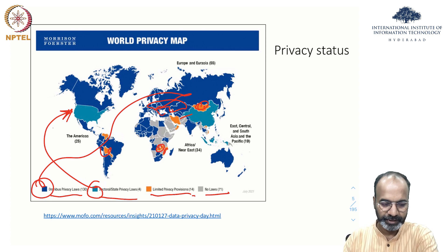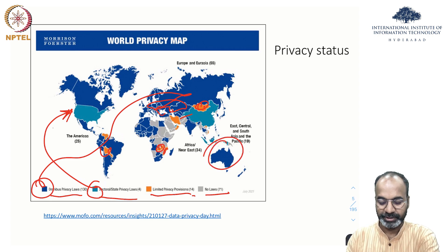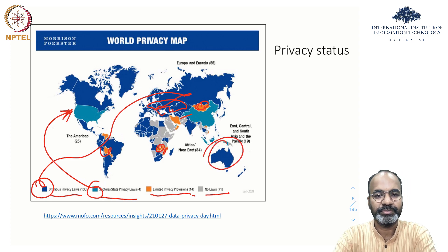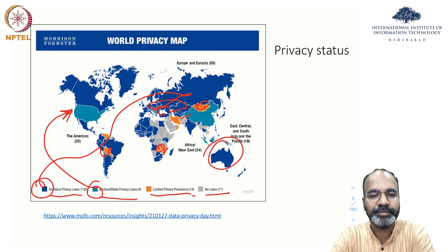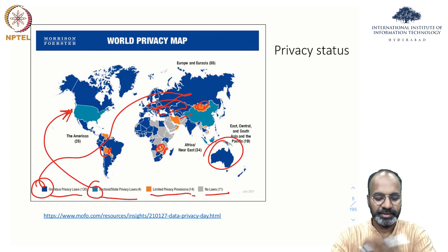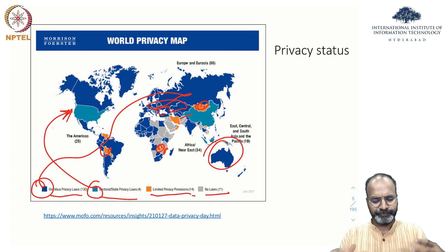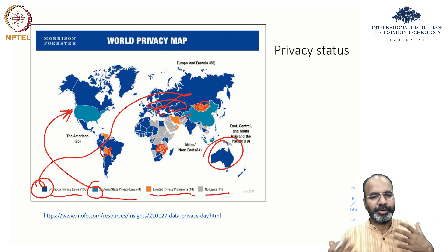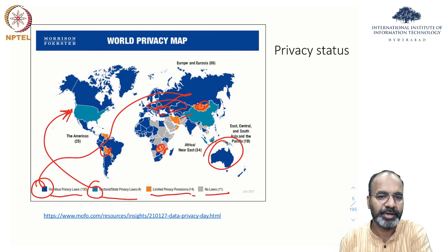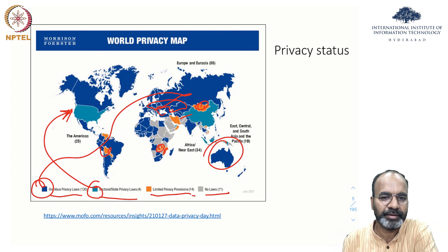Limited privacy provisions are the orange spots on the map. Australia also has pretty stringent privacy laws. This graph is built on concepts connected in week 11.